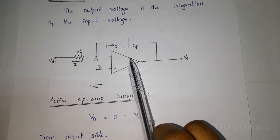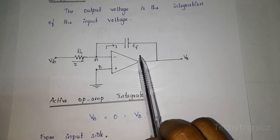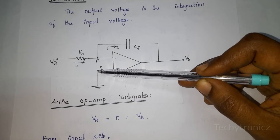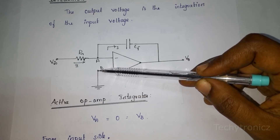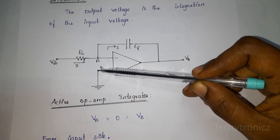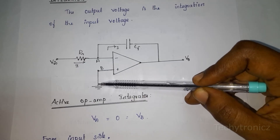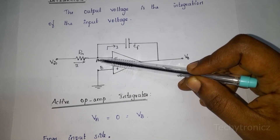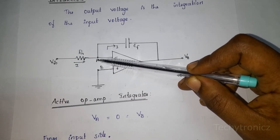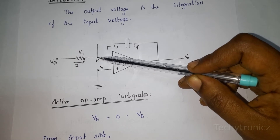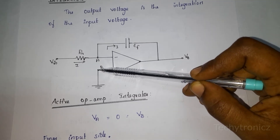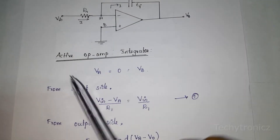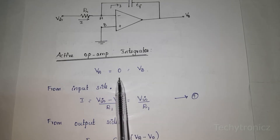We will calculate the output voltage of the integrator. This is node B — node B is grounded. Node A is also at ground potential from the concept of virtual ground. That means VB is equal to 0, and VA is also equal to 0.